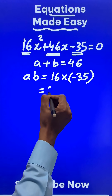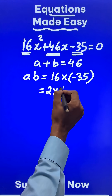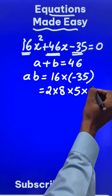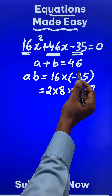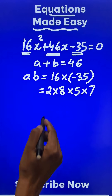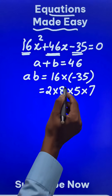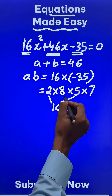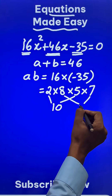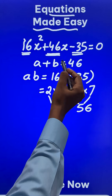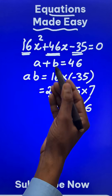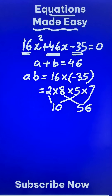So 16 can be written as 2 times 8 and 35 can be written as 5 times 7. But now in place of two numbers, I have four numbers, so I have to regroup them. Like 2 and 5 make 10, and 8 and 7 make 56. Can you get 46 by adding or subtracting 56 and 10? Obviously yes. And there you have the middle term split factors.